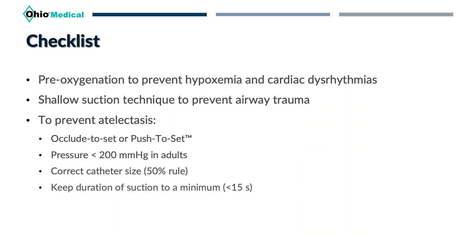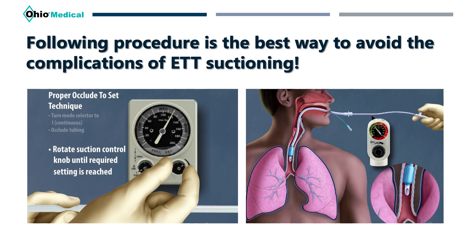First, we need to make sure that there is an indication to suction — any hazard of suctioning can be avoided by not suctioning at all if there's not an indication. If suctioning is indicated, we should pre-oxygenate the patient to prevent hypoxemia and cardiac dysrhythmia. We should only shallow suction to prevent airway trauma. To prevent atelectasis: occlude to set or push to set suction pressure; use a pressure of less than 200 mmHg in adults; use a catheter that occludes less than 50 percent of the inner diameter of the airway; and keep each suctioning event to less than 15 seconds. I would encourage each of you to develop and implement an artificial airway suctioning policy and procedure at your facility — a policy and procedure, along with accountability, is an effective way to ensure suctioning is being done safely.